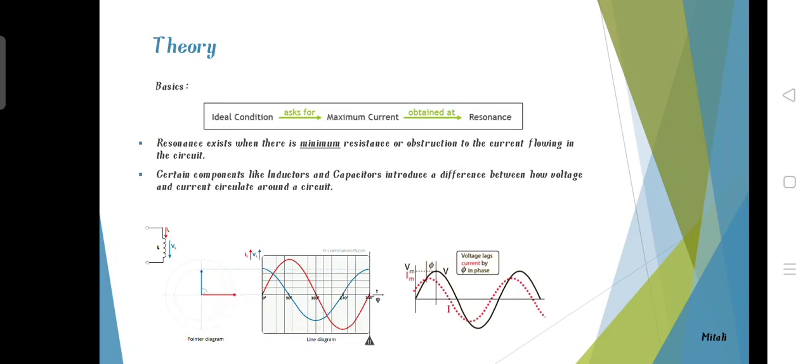Certain components like inductors and capacitors introduce a difference between high voltage and currents circulate around the circuit. Here we can see how the phase changes with respect to time on this graph or curve.